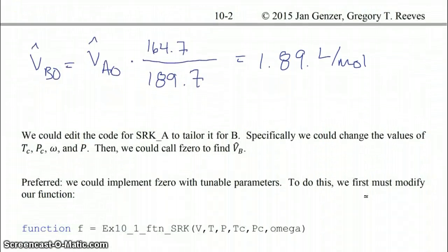Okay so what we could do to solve for B is we could just take the SRK code that we already wrote for A and tailor it for B. So we would go into the function and change the values of Tc, Pc, omega to change it to gas B and then also the pressure is different. And then we could call on fzero just the same way we did before and find the molar volume of B. But there's a more preferred way to do this. And what we want to do is we want to implement fzero with tunable parameters. So fzero with parameters is the path that we want to go by. And the reason why is it makes our calling on fzero and the SRK equation of state a little bit more general.